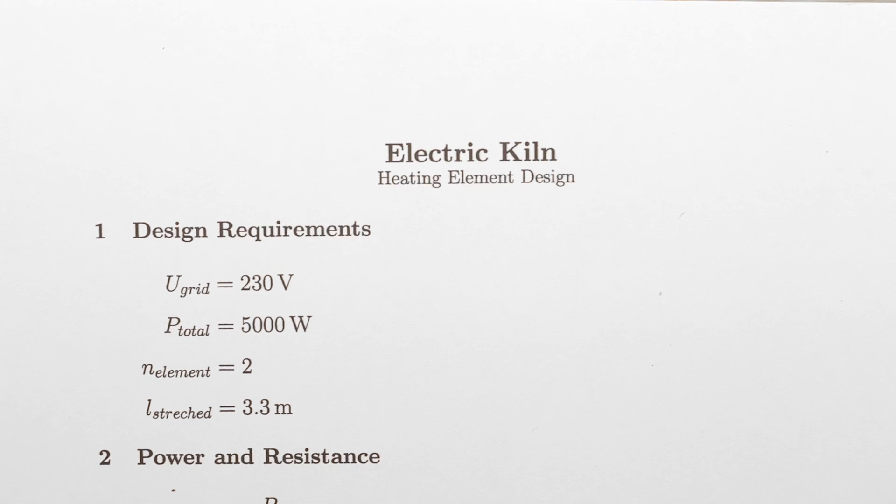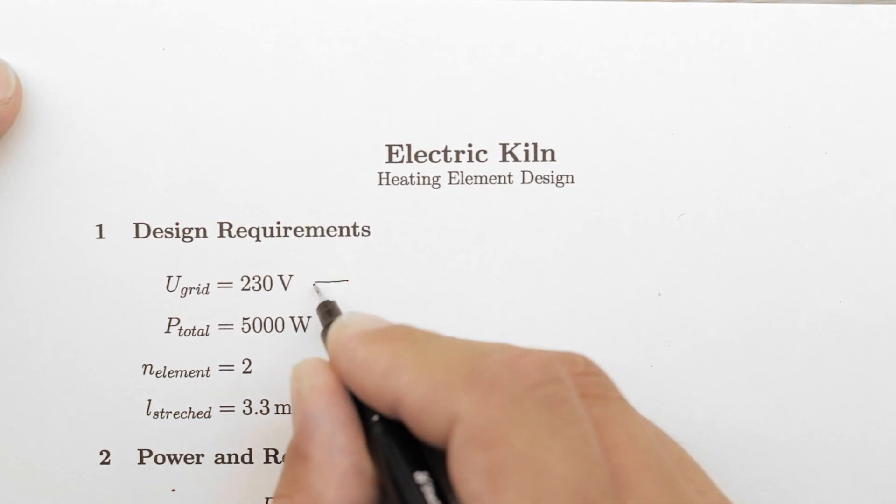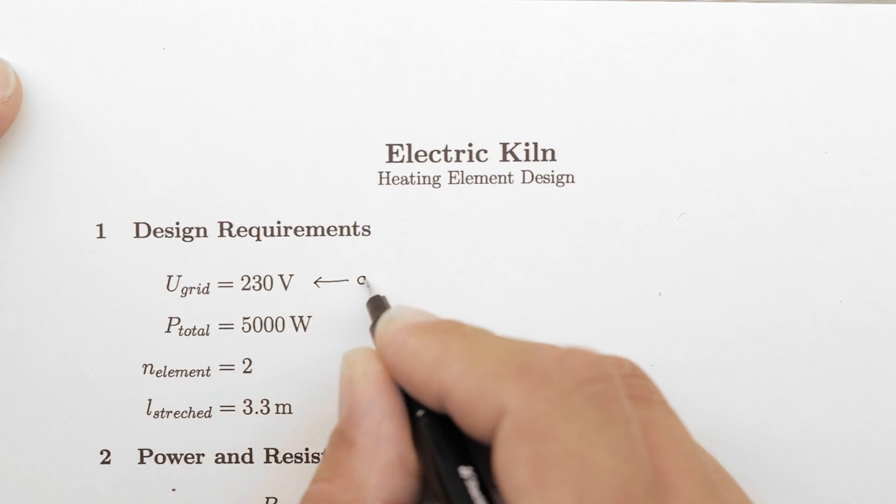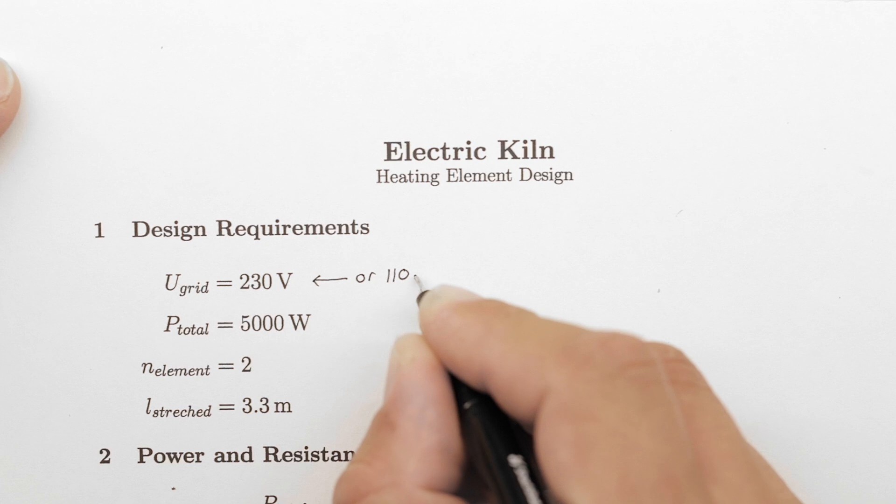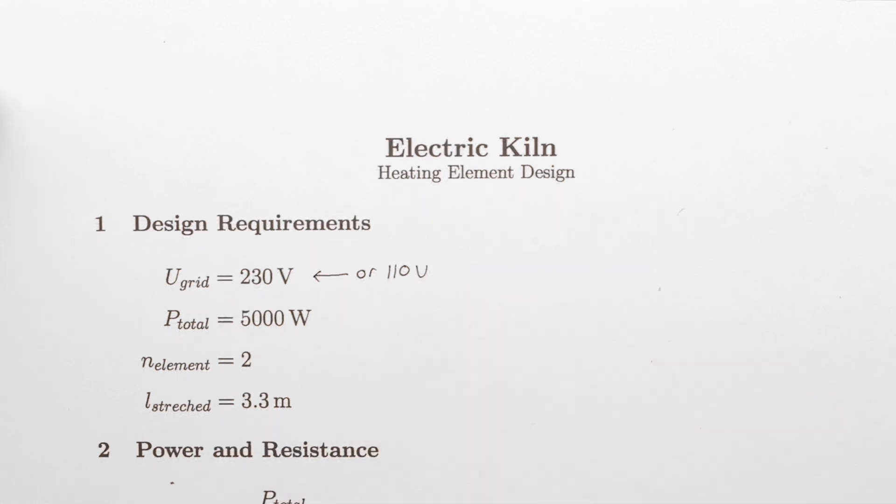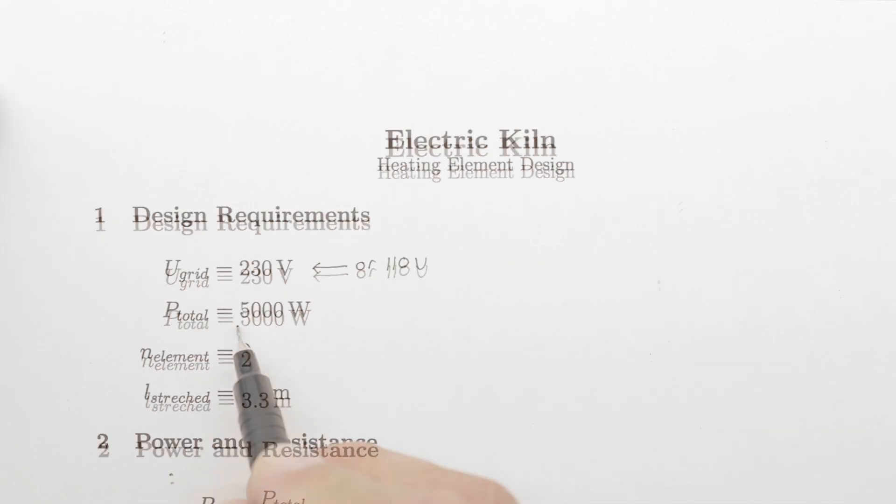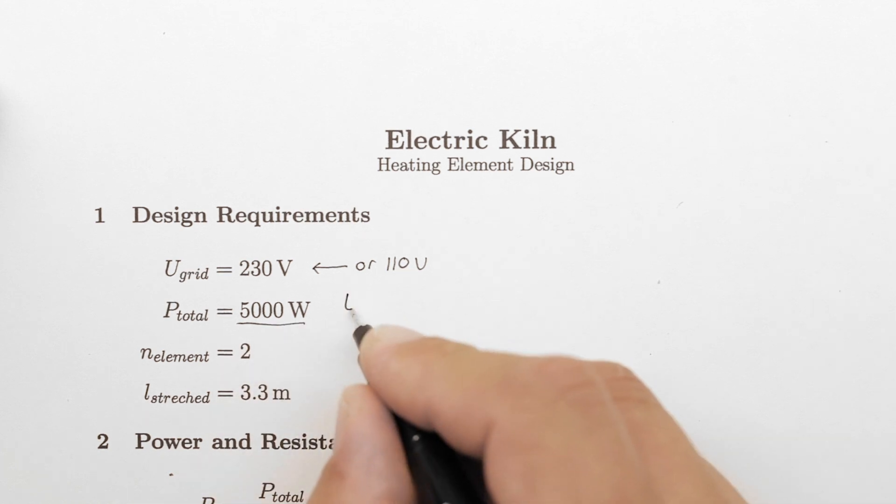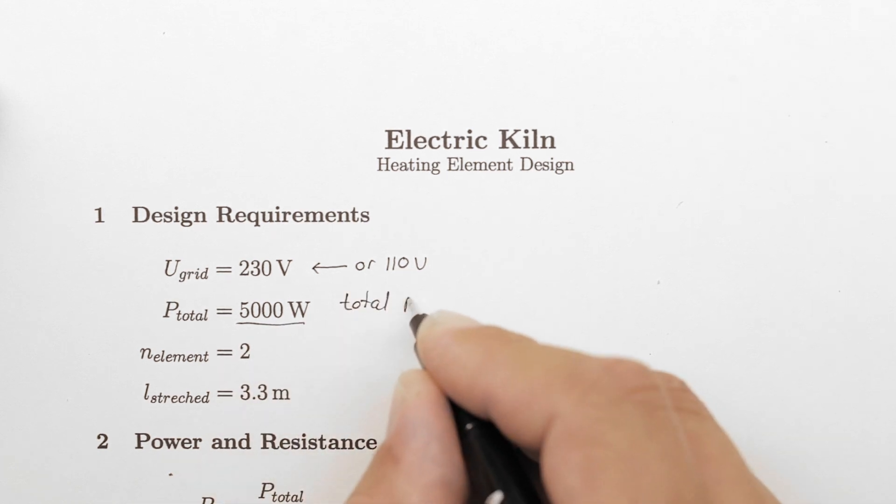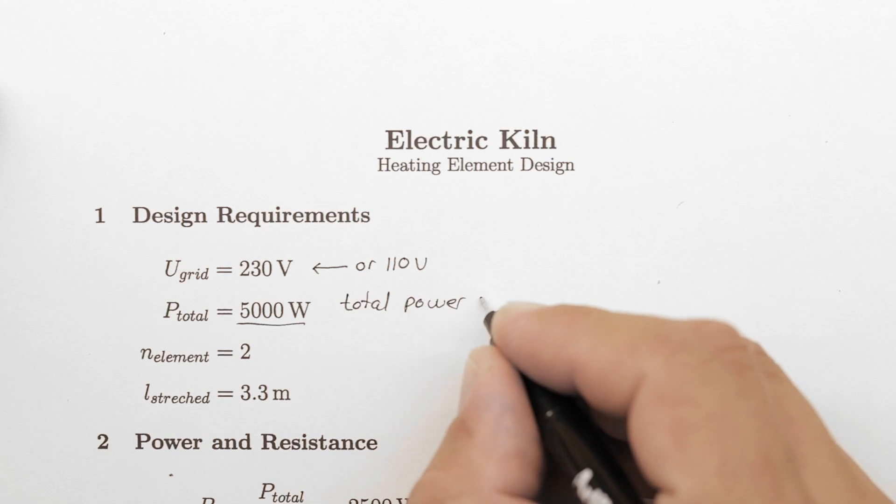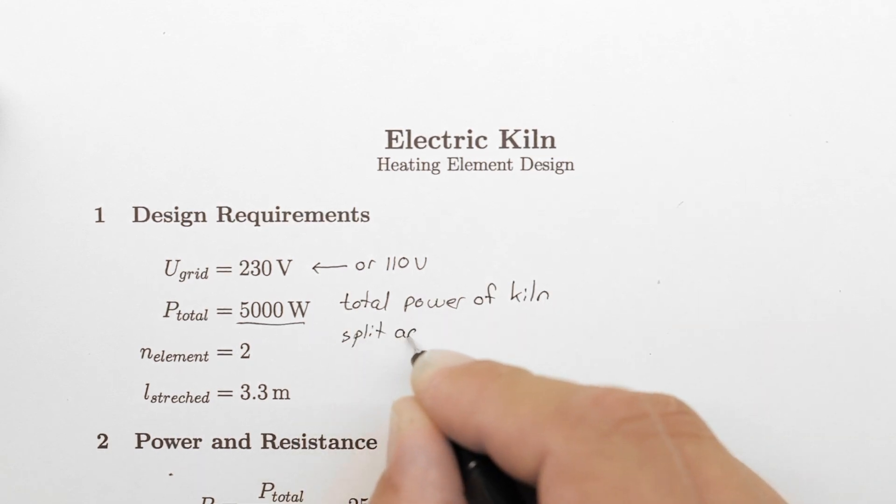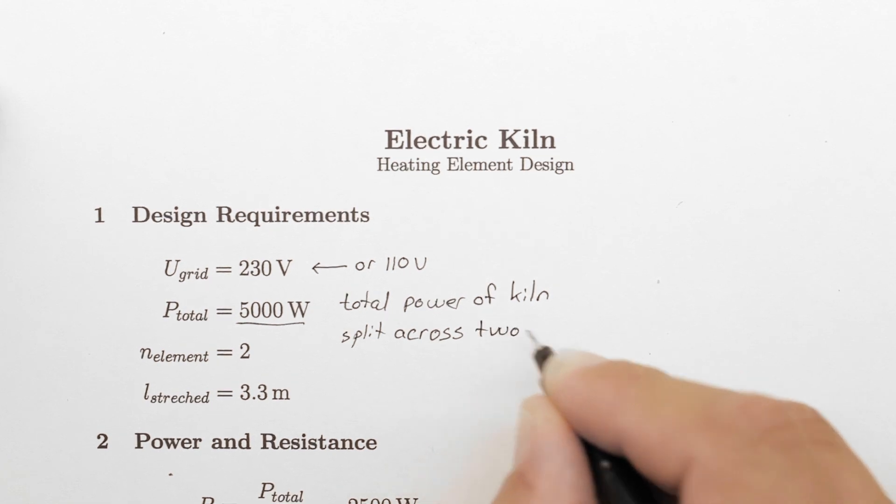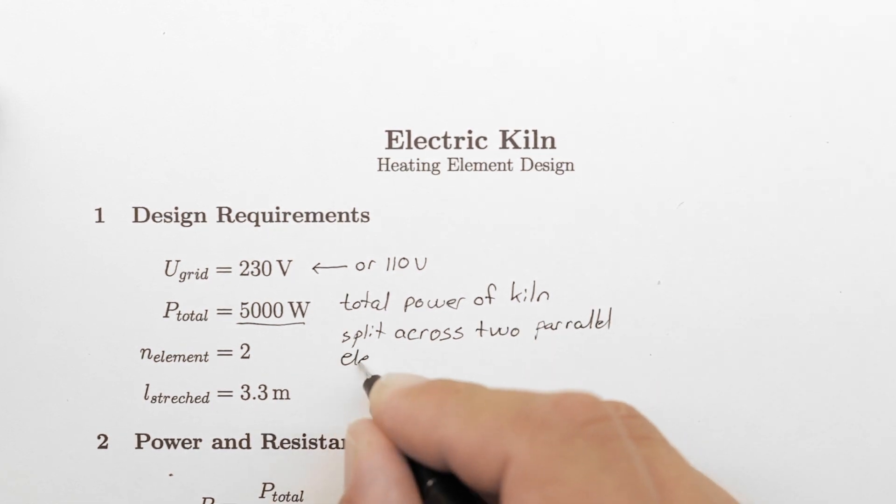The first step is to determine the design requirements by choosing what voltage the heating element will run at. In my case, I have access to 230 volts where you might be running at 110 if you're situated in North America. By looking at commercially available kilns of similar size, I have determined that 5 kilowatts is a suitable power level to aim for. As I have three phases available in my workshop, I have decided to split the 5 kilowatt heating element into two separate sections running on one phase each.